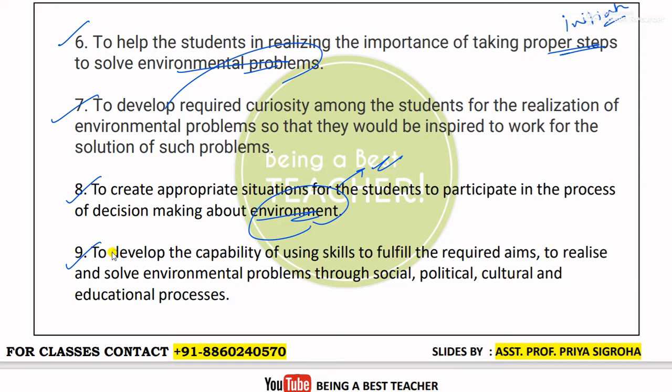Next is to develop the capability of using skills to fulfill the required aims, to realize and solve environmental problems — whatever particular skills are needed — through social, political, and cultural educational processes, children become capable enough to solve those environmental problems.